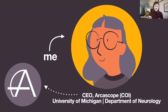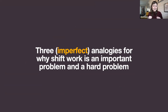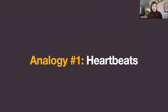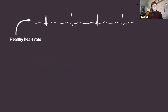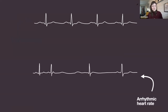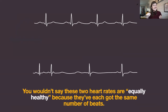I'm going to kick things off with three imperfect analogies for why shift work is simultaneously a very important and hard problem. My first analogy is heartbeats. Imagine I had an audio recording of a heartbeat that was rhythmic, strong, and regular — bump, bump, bump — and then a second recording that was very arrhythmic, with no real rhythm to it. You would never say those two heartbeats were equally healthy just because they had the same number of beats.